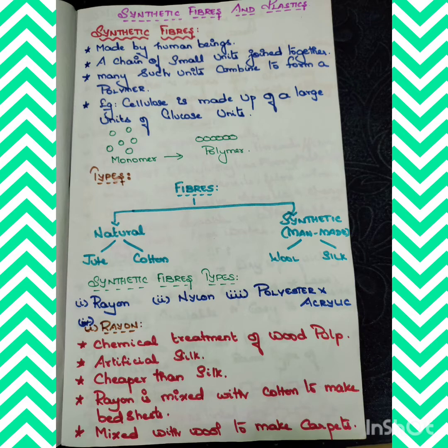Your brain should trigger you to ask: rayon comes from wood pulp, a natural product — so is it a synthetic fiber? The answer is yes, because we are using a chemical process to produce it, making it a man-made fiber. Rayon is cheaper than silk and can be woven into beautiful silk-like fibers. It can also be dyed in various colors.